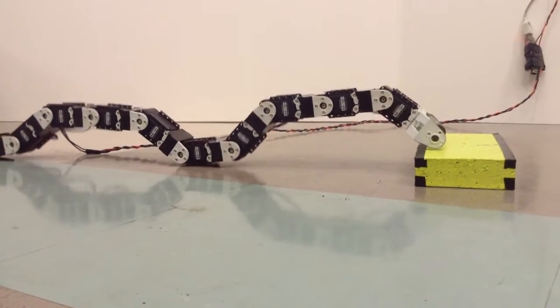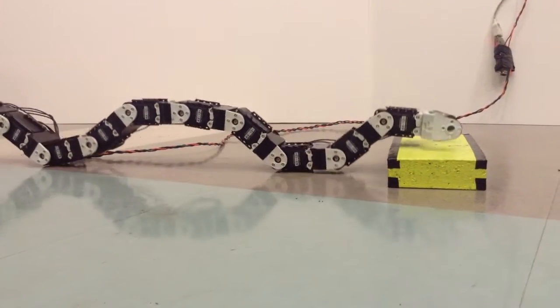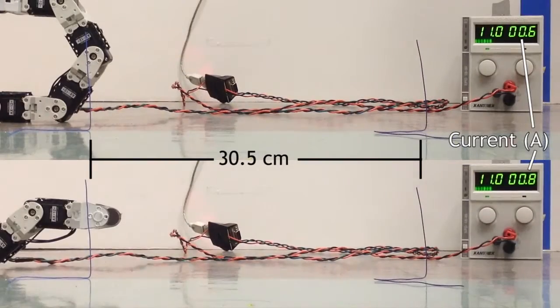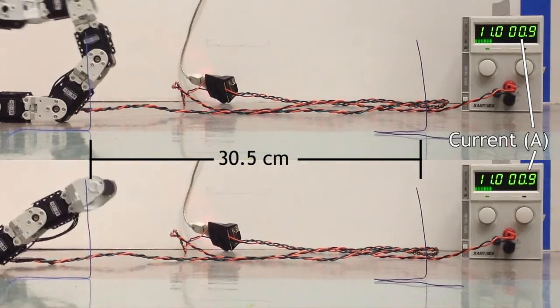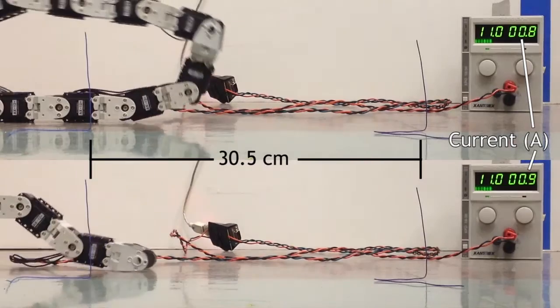The rolling and worm methods of locomotion were compared in a series of tests. On flat ground, rolling proved to be faster while consuming about the same power as the worm method.